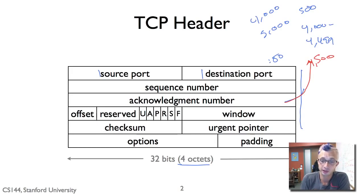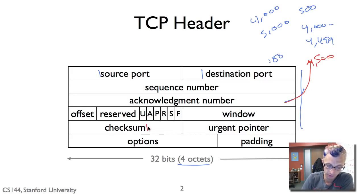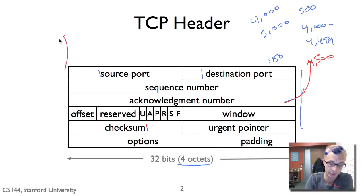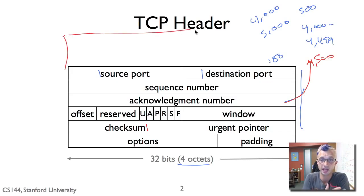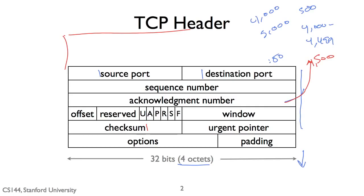After the sequence number and acknowledgement number we have a bunch of fields. The checksum is computed over the TCP pseudo-header, which is the TCP header as well as some of the IP header. This adds a little bit of additional resilience for the IP addresses. The checksum covers the pseudo-header, the TCP header, and then the data within the TCP segment — it stretches before the packet to the pseudo-header filled in from the IP header and then to the end of the segment. It is a simple one's complement checksum.